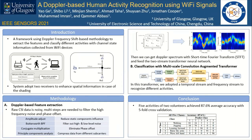Our paper proposes a framework using Doppler Frequency Shift (DFS)-based methodology to extract features and classify different human activities with channel state information collected from Wi-Fi devices. You can see from the figure that we apply commercial Wi-Fi devices to collect the data.